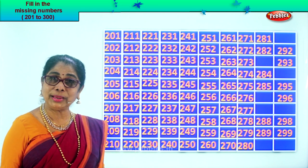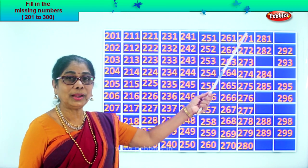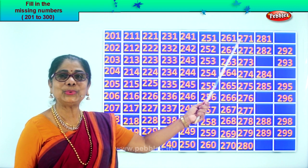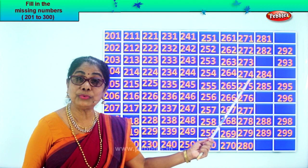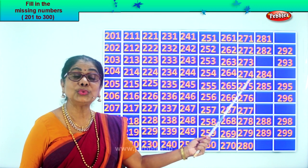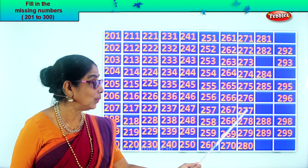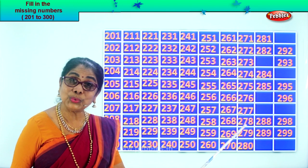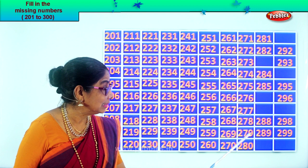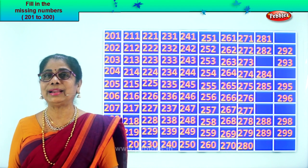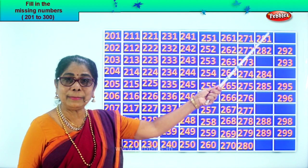Very good. Are you enjoying? Good. Two hundred and seventy-one, two hundred and seventy-two, two hundred and seventy-three, two hundred and seventy-four, two hundred and seventy-five, two hundred and seventy-six, two hundred and seventy-seven, two hundred and seventy-eight, two hundred and seventy-nine, two hundred and eighty.